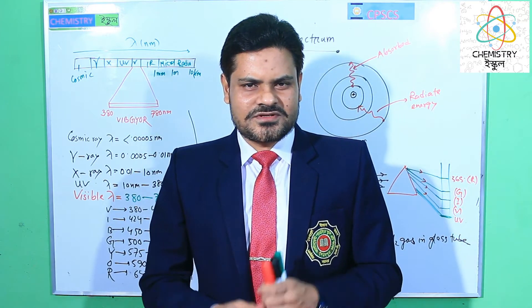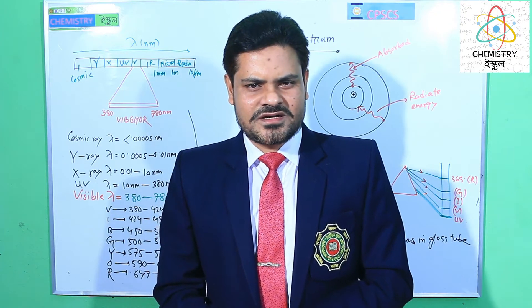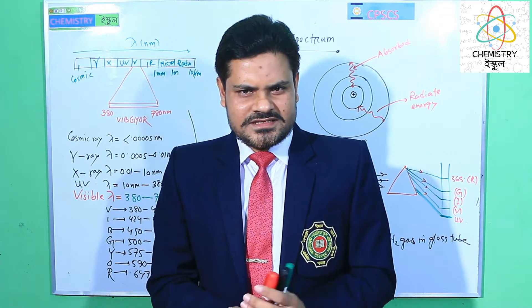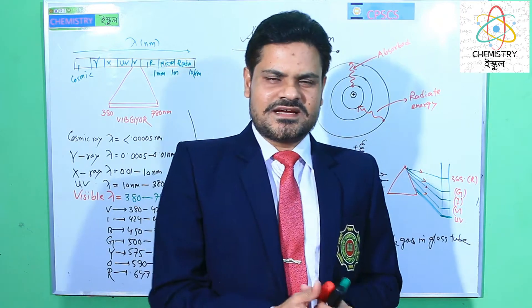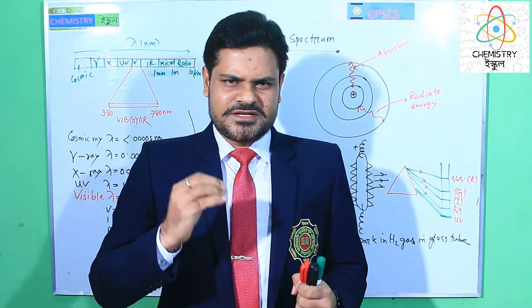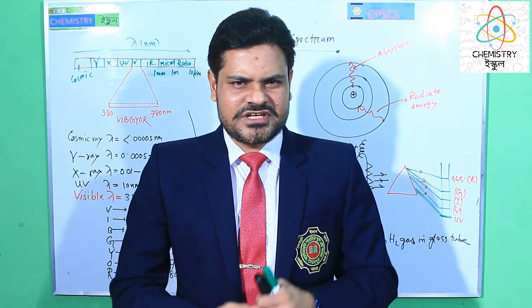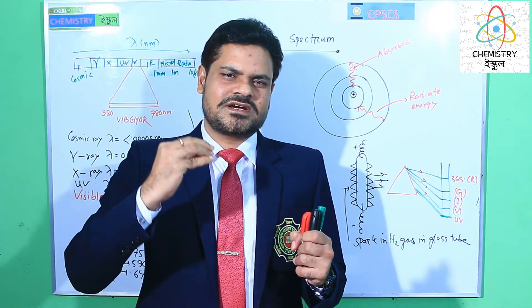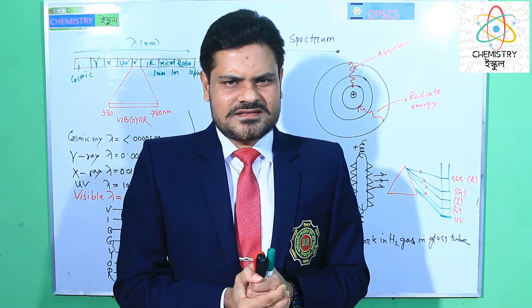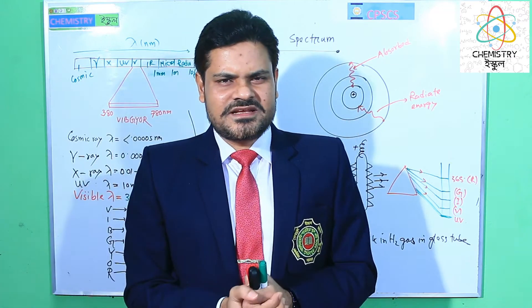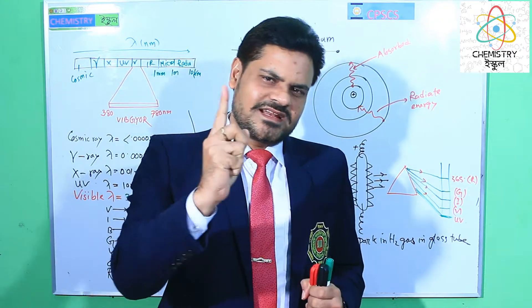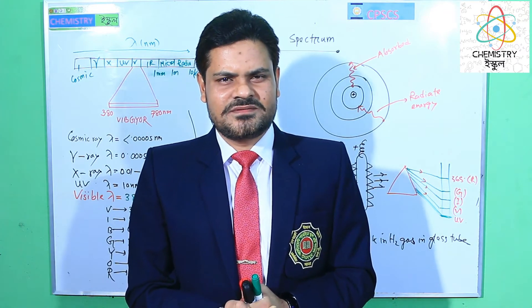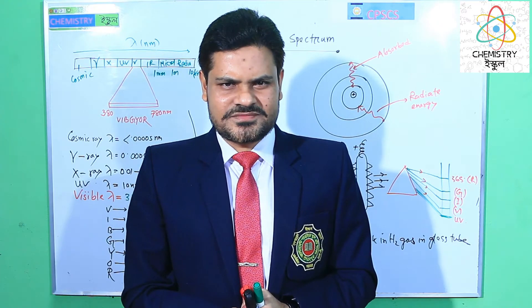Dear learners, the concept about the spectrum came from the Niels Bohr model. We know that when the electron moves around the nucleus, it does not emit or gain energy itself. But if we heat it, the electron absorbs energy and reaches a higher energy level. And when we stop heating, the electron comes back to its own energy level by releasing or emitting energy.